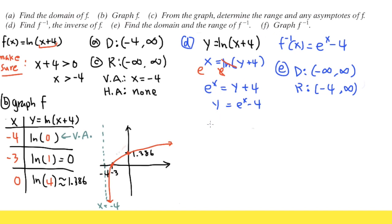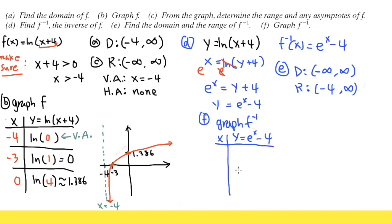At the very end, part F, we graph the inverse function using a table. The y values come from e to the x minus 4. Using x equals 0: e to the 0 is 1, and 1 minus 4 is negative 3. Notice that earlier we had the point negative 3 comma 0 for the original; now for the inverse we have 0 comma negative 3 — the x and y got switched.